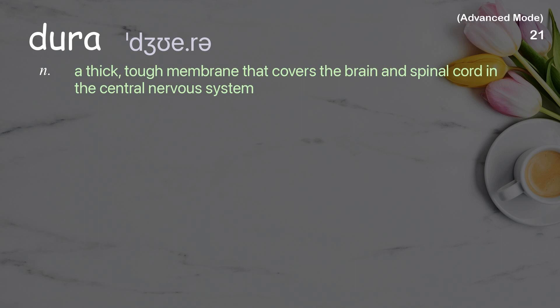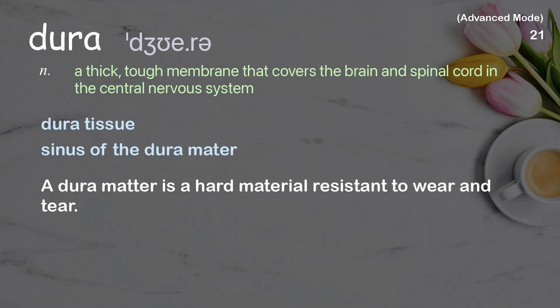Dura: A thick, tough membrane that covers the brain and spinal cord in the central nervous system. Examples: Dura tissue, sinus of the dura mater. A dura mater is a hard material resistant to wear and tear.